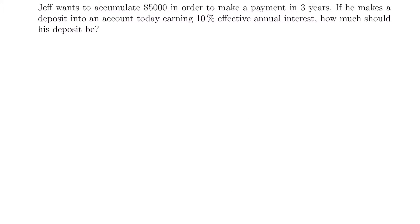Welcome back. We are going to start with this example where Jeff wants to accumulate $5,000 in order to make a payment in three years. If he makes a deposit into an account today earning 10% effective annual interest, how much should his deposit be?